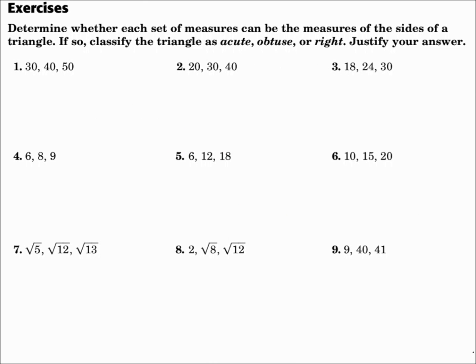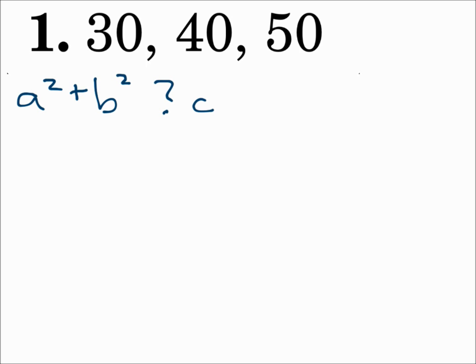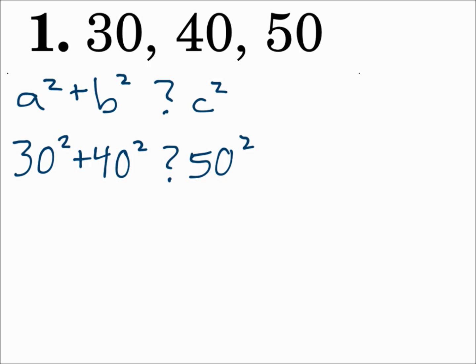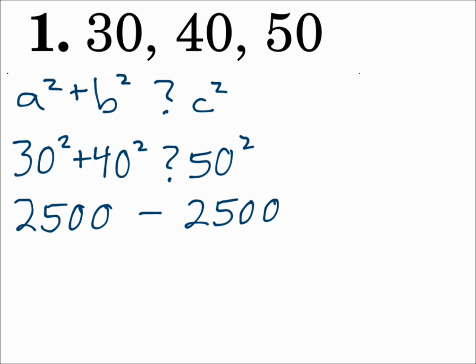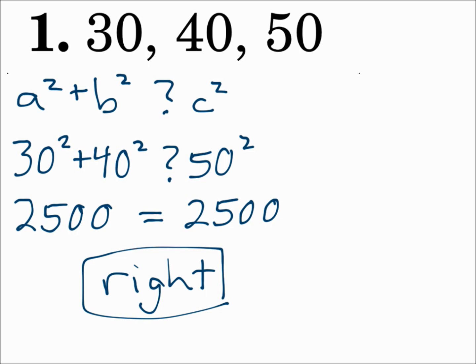Determine whether each set of measures can be the measures of the sides of a triangle. If so, classify the triangle as acute, obtuse, or right. Justify your answer. Number 1: 30, 40, and 50. For it to be a triangle, add the two small sides up and see if it's bigger than the largest side. Since 30 plus 40 is greater than 50, we can now test it. We'll test it with a squared plus b squared, comparing that to c squared. Remember, c is going to be the biggest number. 30 squared plus 40 squared compares to 50 squared — you get 2,500 and 2,500. Those are equal, and since those are equal, that makes this a right triangle. When a squared plus b squared equals c squared, it's a right triangle.